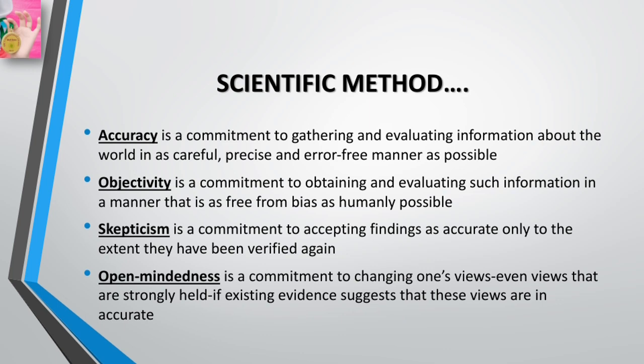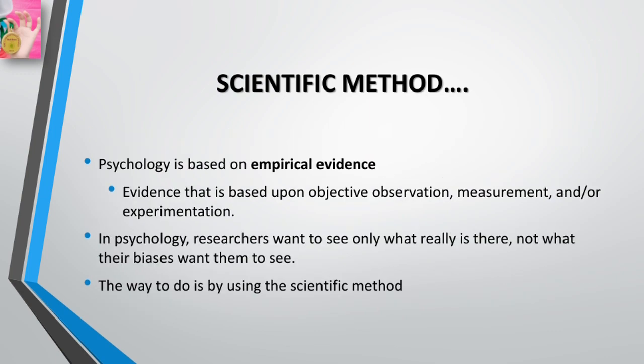Collectively, the assumptions and attitudes that psychologists assume reflect critical thinking. Like any science, psychology is based on empirical evidence — evidence that is the result of objective observation, measurement, and experimentation. Psychology researchers want to see what is really there, not what their biases might want them to see. The way to do this is by using the scientific method, a system of reducing bias and errors in the measurement of data.